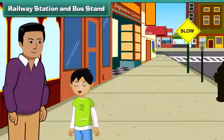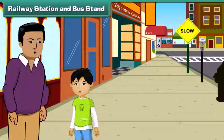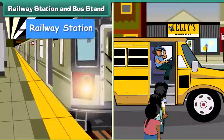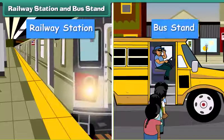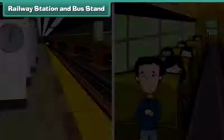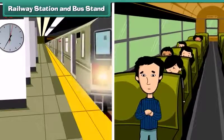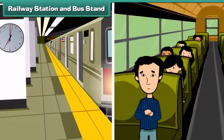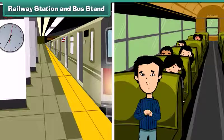Dad, I am getting tired now. Shall we go back home? Okay dear, let's go to the railway station. This is the railway station, and in front of it, that is the bus stand. People travel by trains or buses. Trains and buses join our city to various places.